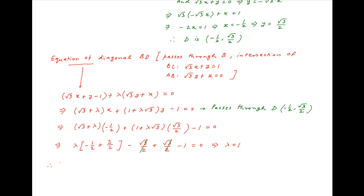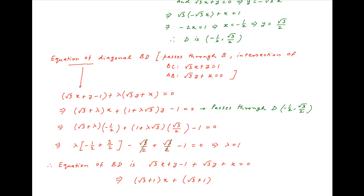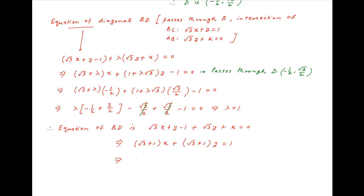Substituting λ = 1 into the equation of diagonal BD, we get (√3 + 1)x + (√3 + 1)y = 1, which simplifies to x + y = 1/(√3 + 1).